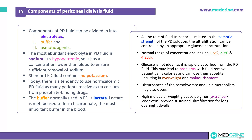Though we said earlier, glucose is not ideal because it is rapidly absorbed from the peritoneal dialysis fluid and may lead to problems with fluid removal, whereby a patient gains calories and can lose appetite, resulting in overweight and malnourishment. Disturbances of carbohydrate and lipid metabolism may also occur in these patients. A high molecular weight glucose polymer known as extraneal or icodextrin provides sustained ultrafiltration for longer overnight dwells.